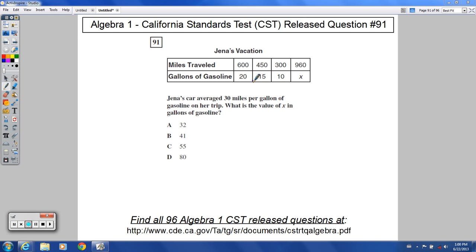The slope, in a sense, is the same each time. So miles traveled, gallons of gasoline, that's miles per divided by gallons. Each time it's 30. So what is the value of X in gallons of gasoline? We're trying to figure out that value right there.